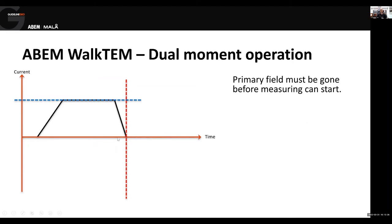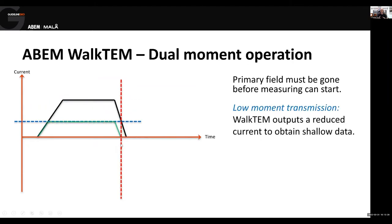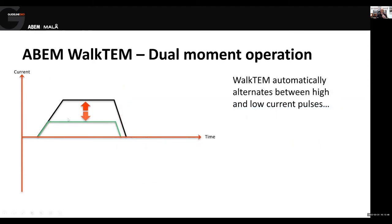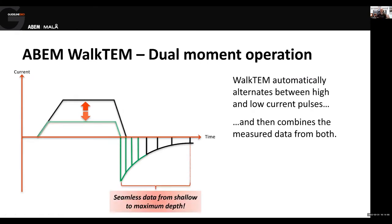The obvious answer is to use a slightly smaller current — what we call a low moment — so we can start recording earlier. But the problem is we have a smaller pulse, the transient is not as strong, and we won't get as deep. So on the WalkTEM, what we do is alternate between high and low moments, high and low current. We record both and combine them so we can produce a single decay, with the low current information at the beginning for shallow data and the high current towards the end for deeper responses. This plays into how we process the data because we'll have separate data streams from the different current levels.